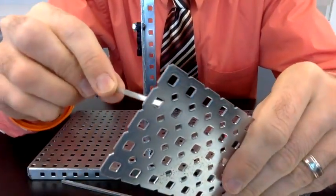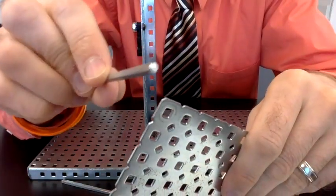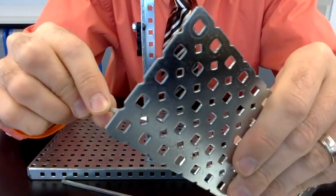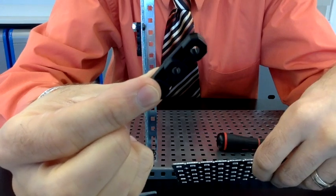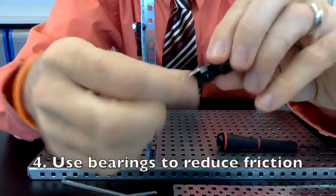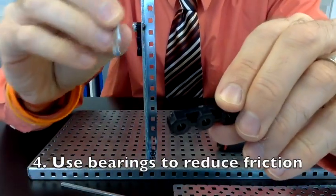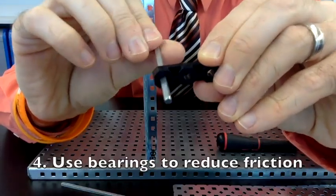There is too much friction when a square axle is trying to spin in a square hole. The bearing reduces the friction by making the square axle spin in a circular hole.